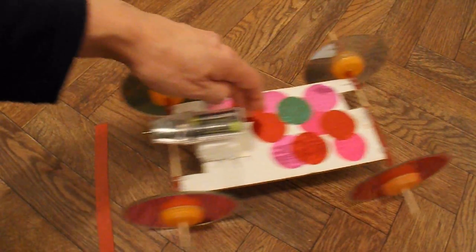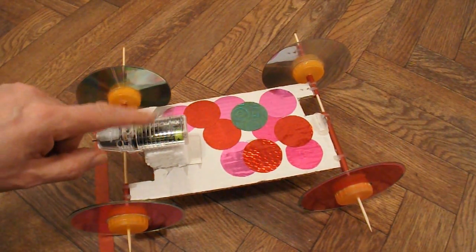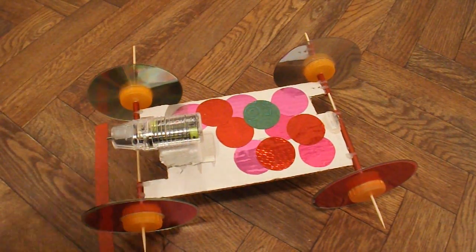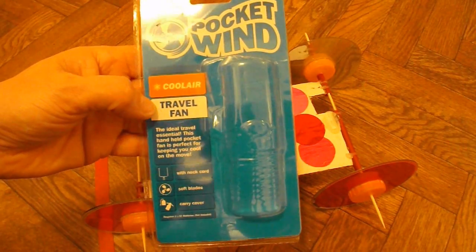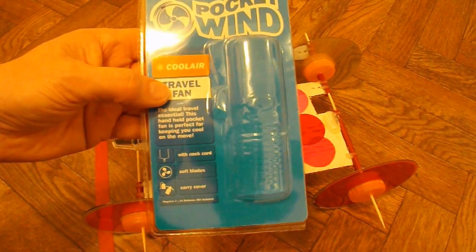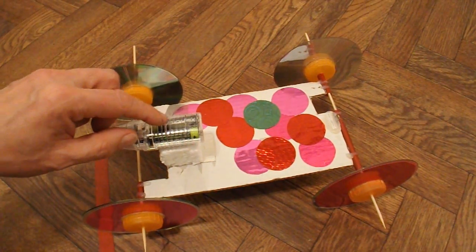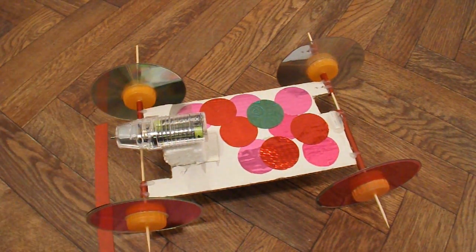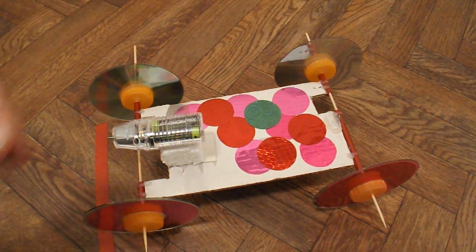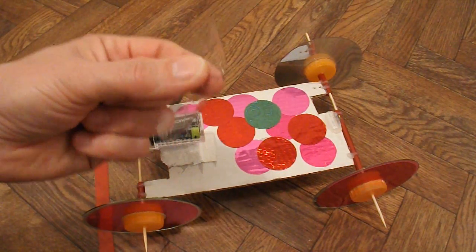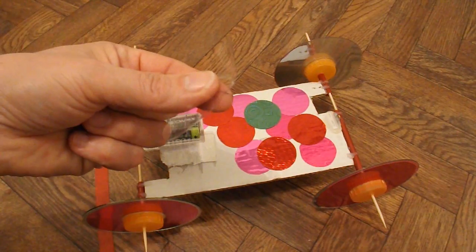This is one of my old rubber band powered cars and this is a pocket wind cool air travel fan. In other words, a little handheld fan that takes two AA batteries. Normally on the front, you probably won't even be able to see this, it has a clear soft plastic fan blade.